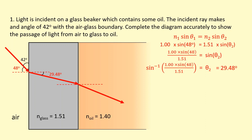To calculate, we apply Snell's law again, but first we need the angle of incidence at this boundary. Because the two normals are parallel, we can use corresponding angles to determine that this angle of incidence is 29.48 degrees — the same as the angle of refraction from the first part.